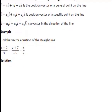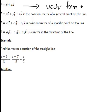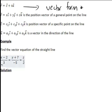Let's illustrate this with an example. We want to find the equation of the following straight line: x minus 2 divided by 3 equals y plus 7 divided by negative 5 equals z divided by 2. With these Cartesian equations, each of these can be thought of as equal to t.